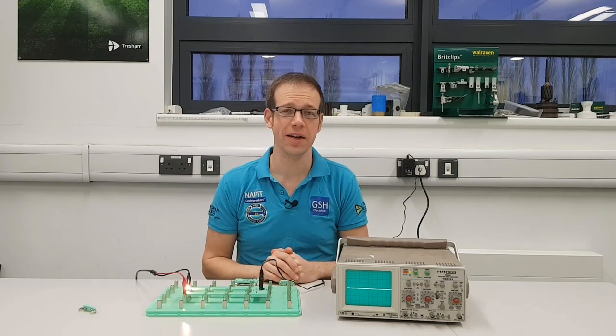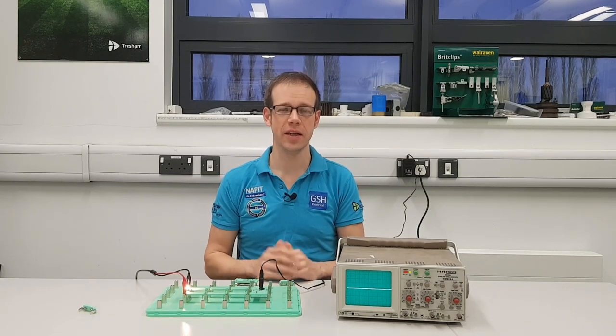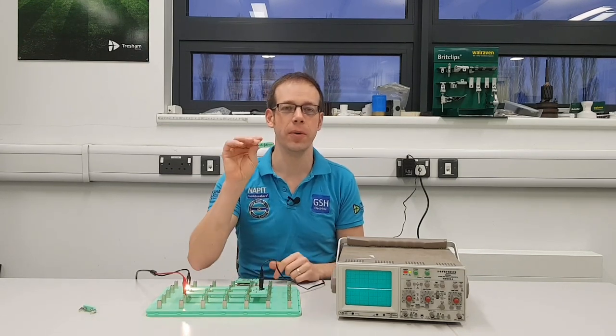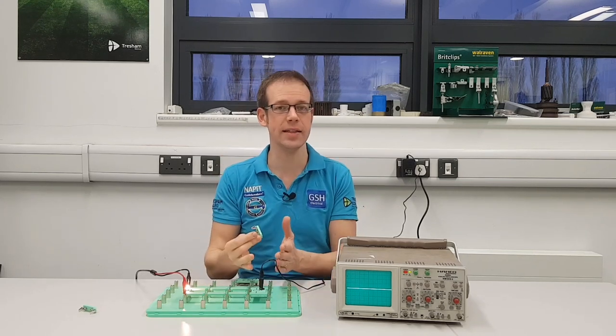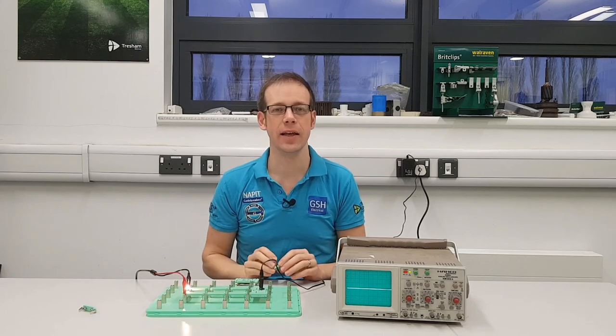Hello and welcome to this Electrical Principles training video. In this video we're going to consider a very simple electrical component. This is a diode and we're going to have a look at how we can use this to convert AC into DC electricity.